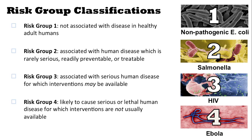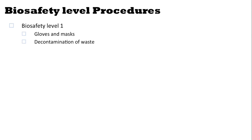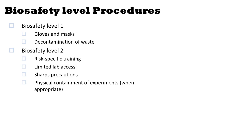This is a classification of risk associated with an agent. There are also biosafety levels, which are procedures appropriate for dealing with various risk group agents. Biosafety level 1 involves gloves and mask, and standard decontamination of waste. Biosafety level 2 adds risk-specific training, limitations on lab access, sharps precautions, and physical containment of experiments when appropriate — for example, if an experiment is likely to cause an aerosol to be formed.